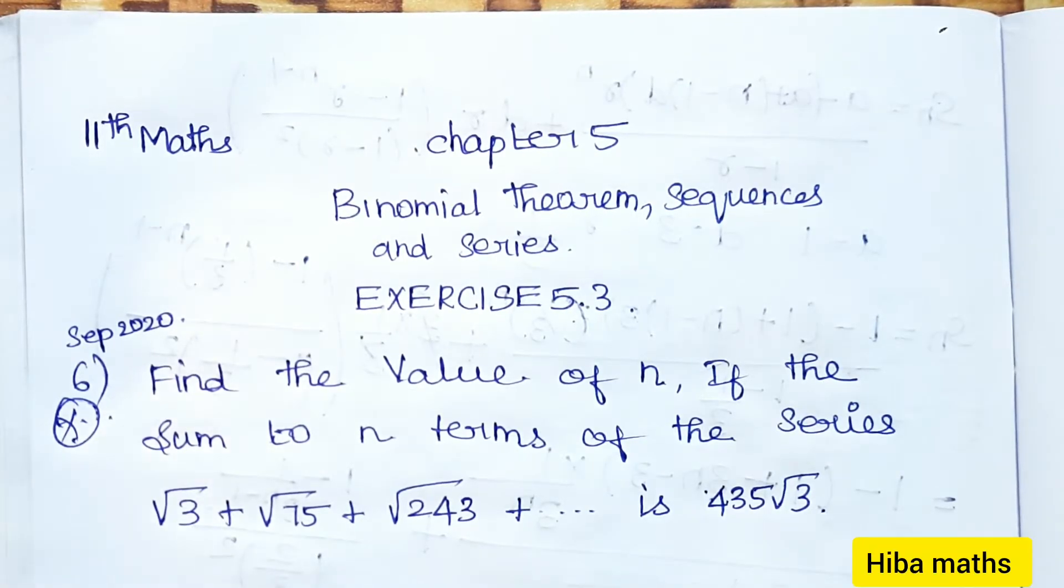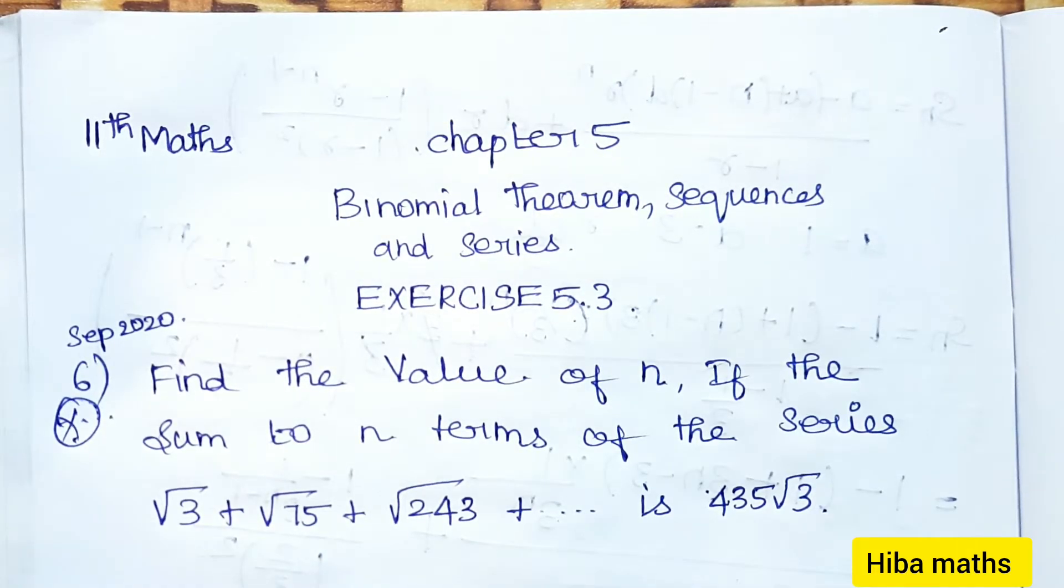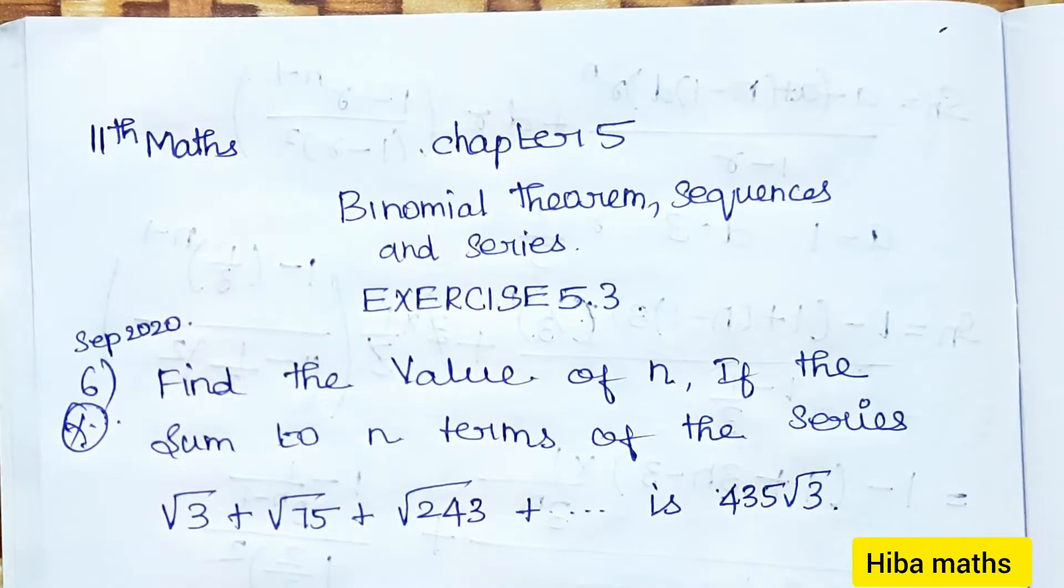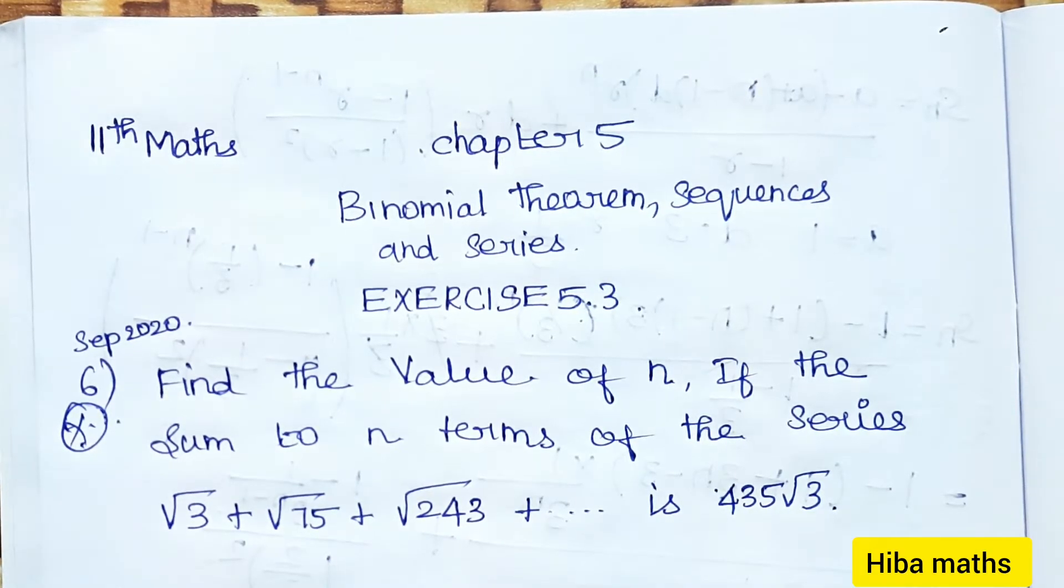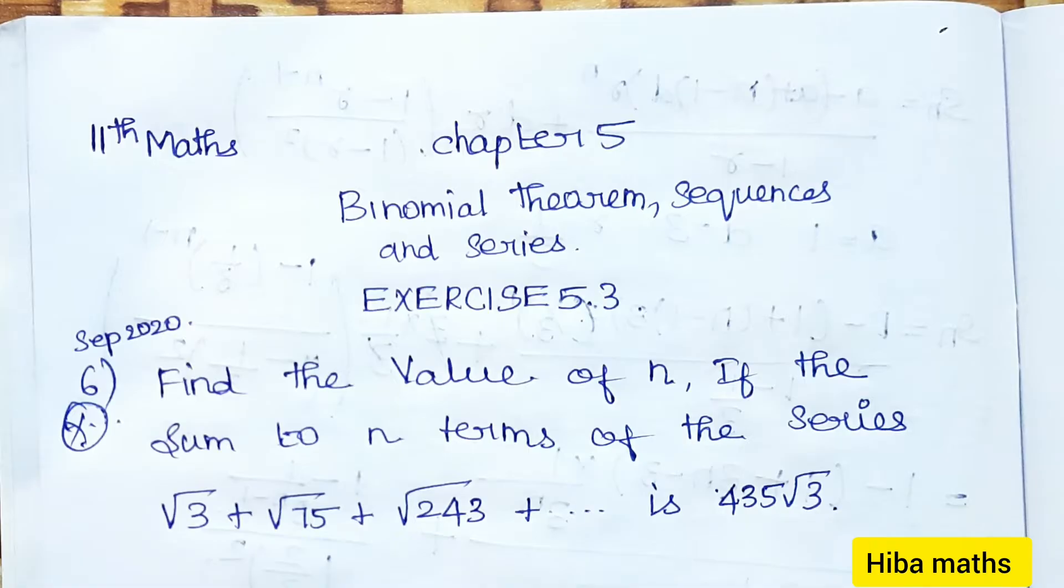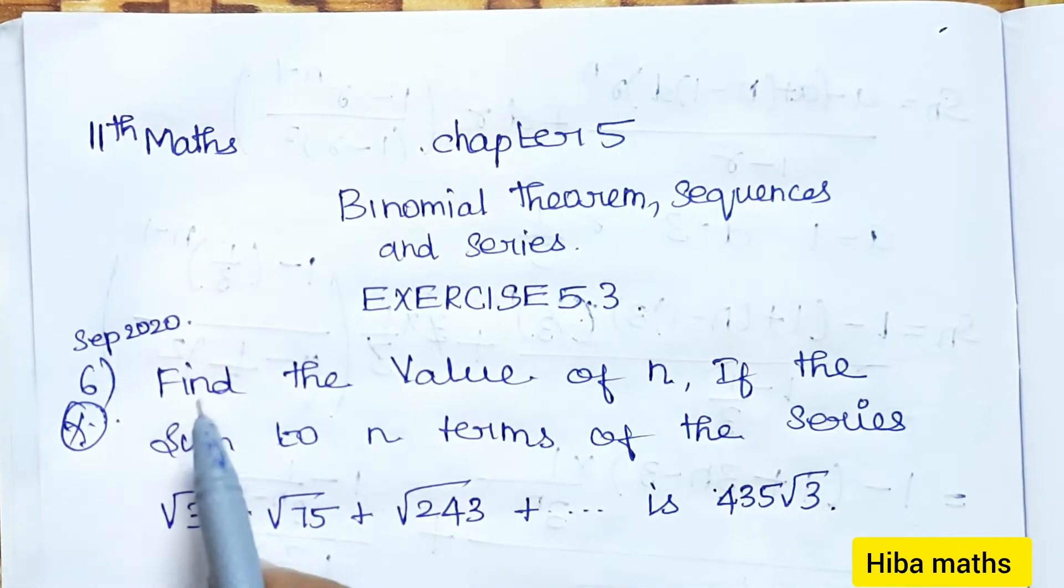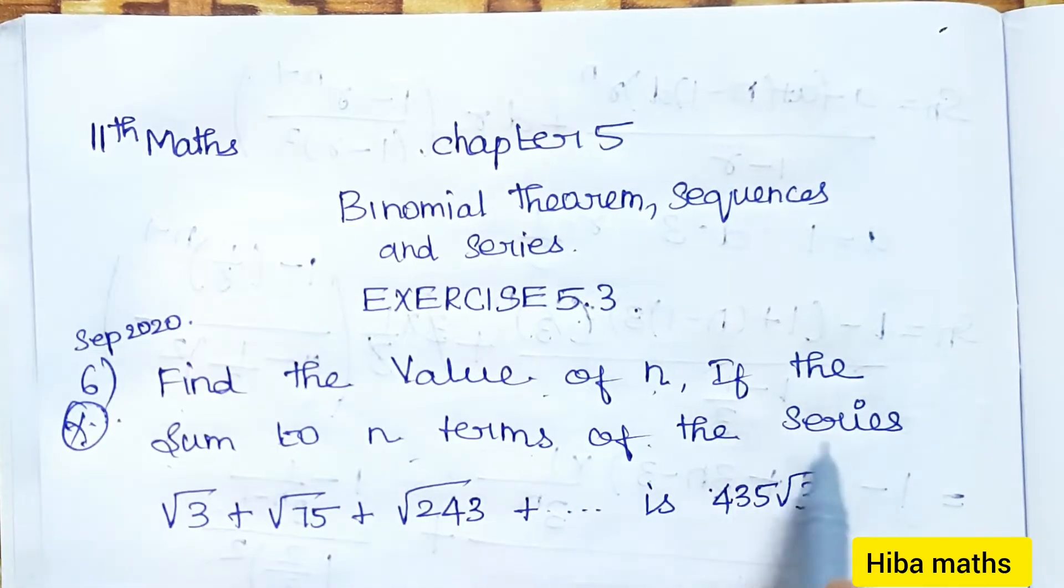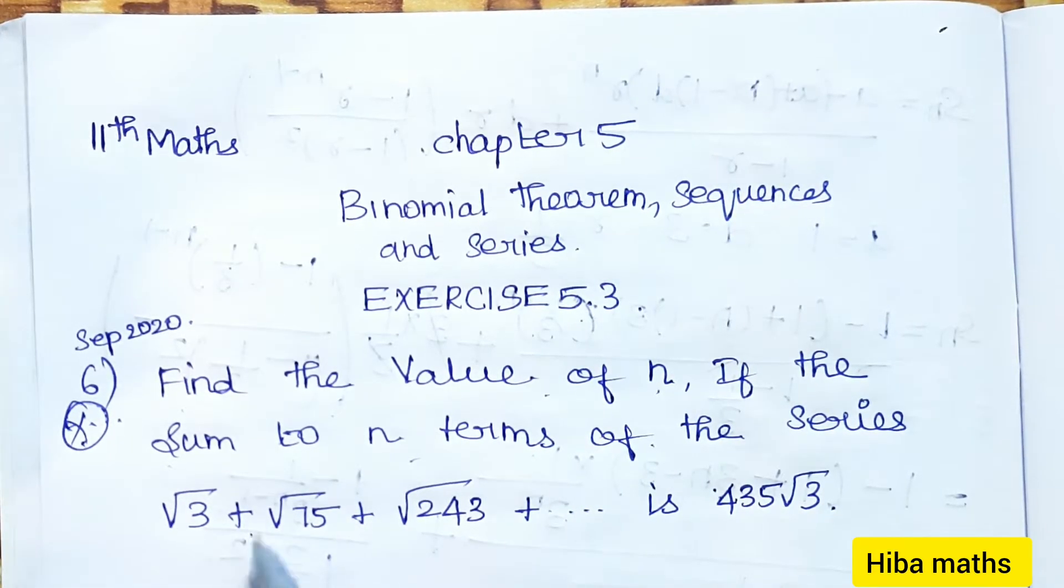Hello students, welcome to Hiba Maths, 11th standard maths, Chapter 5: Binomial Theorem, Sequences and Series, Exercise 5.3, question 6. This is from September 2020, an important question. Find the value of n if the sum to n terms of the series √3 + √75 + √243 + ... is 435√3.